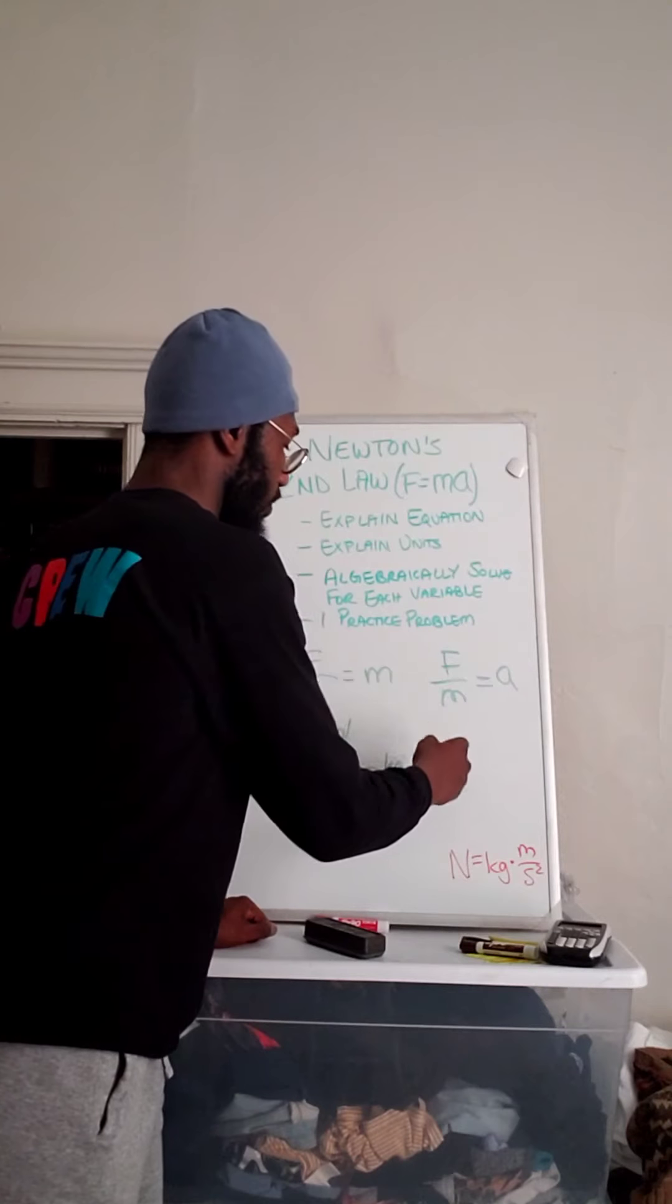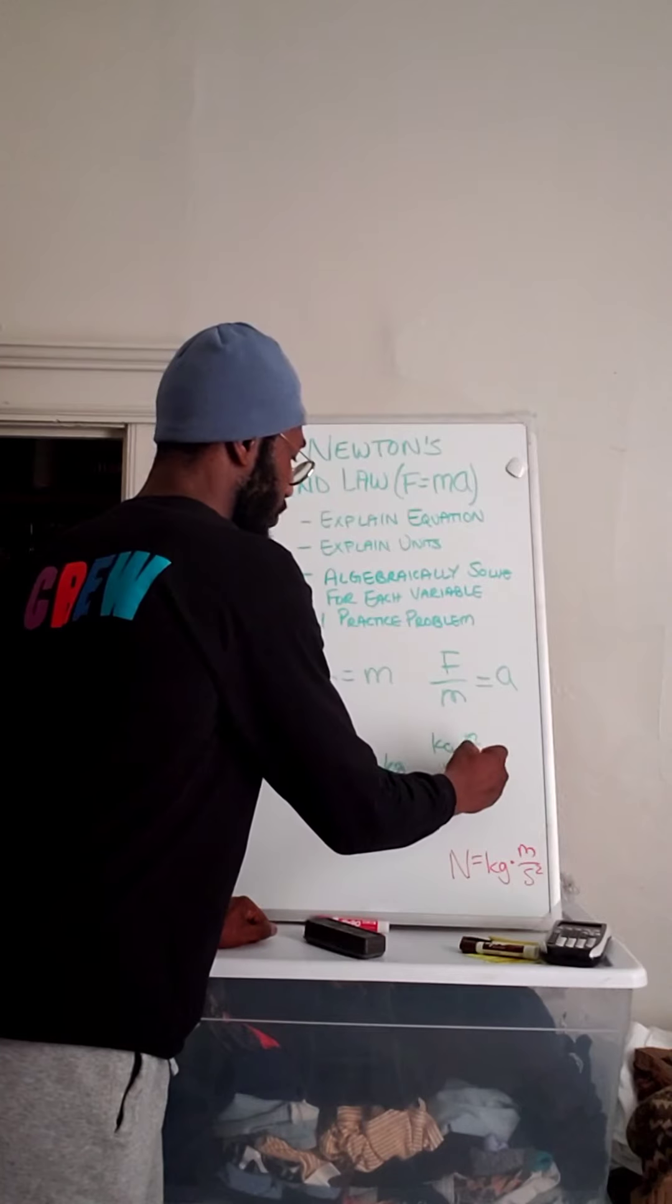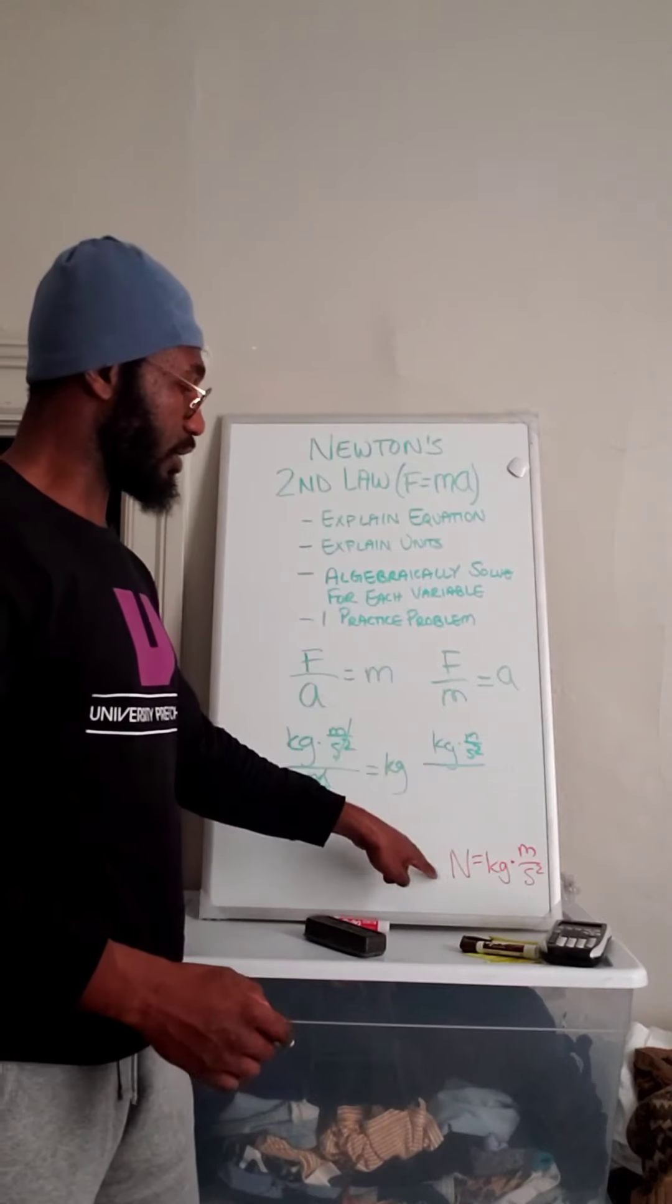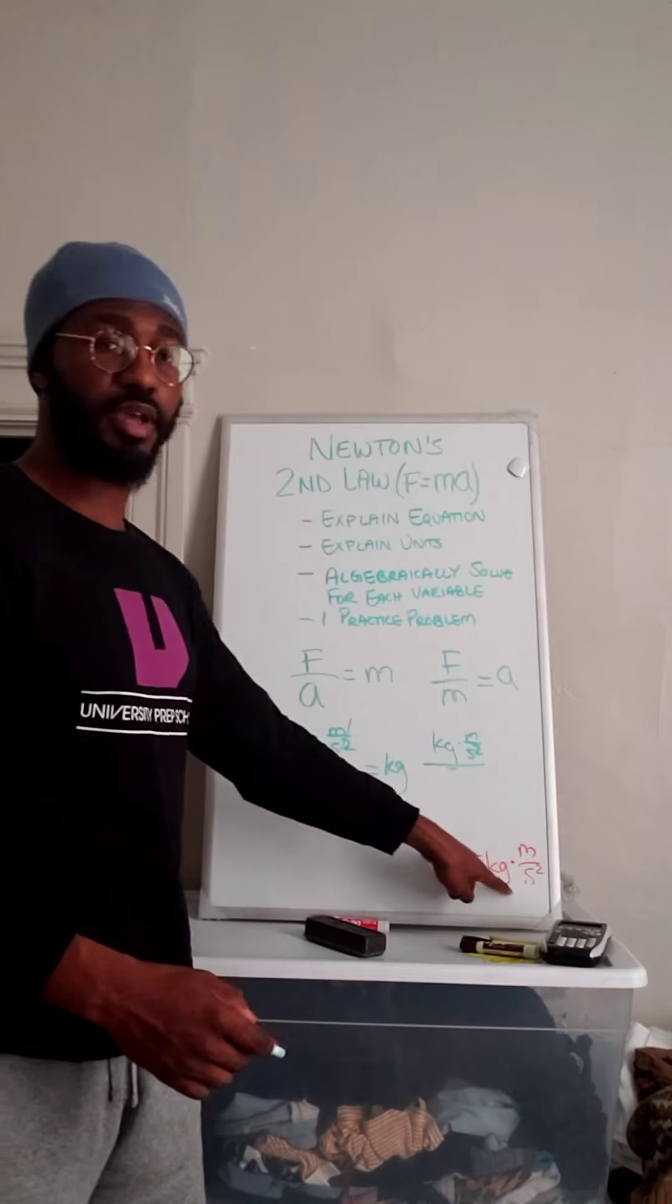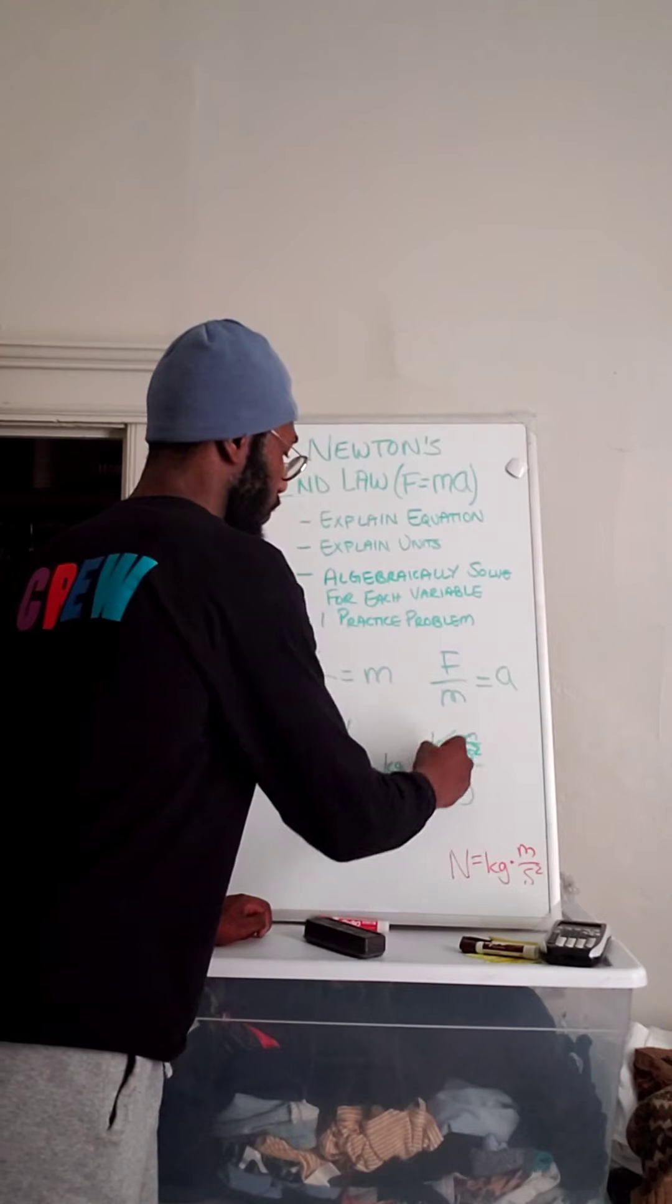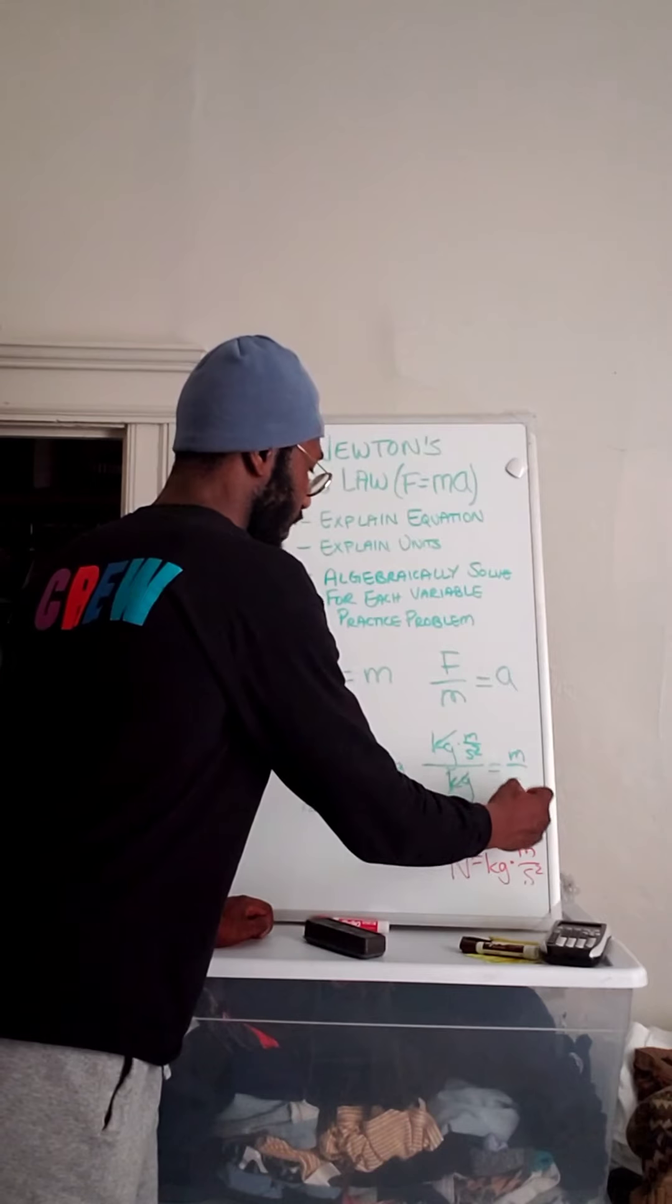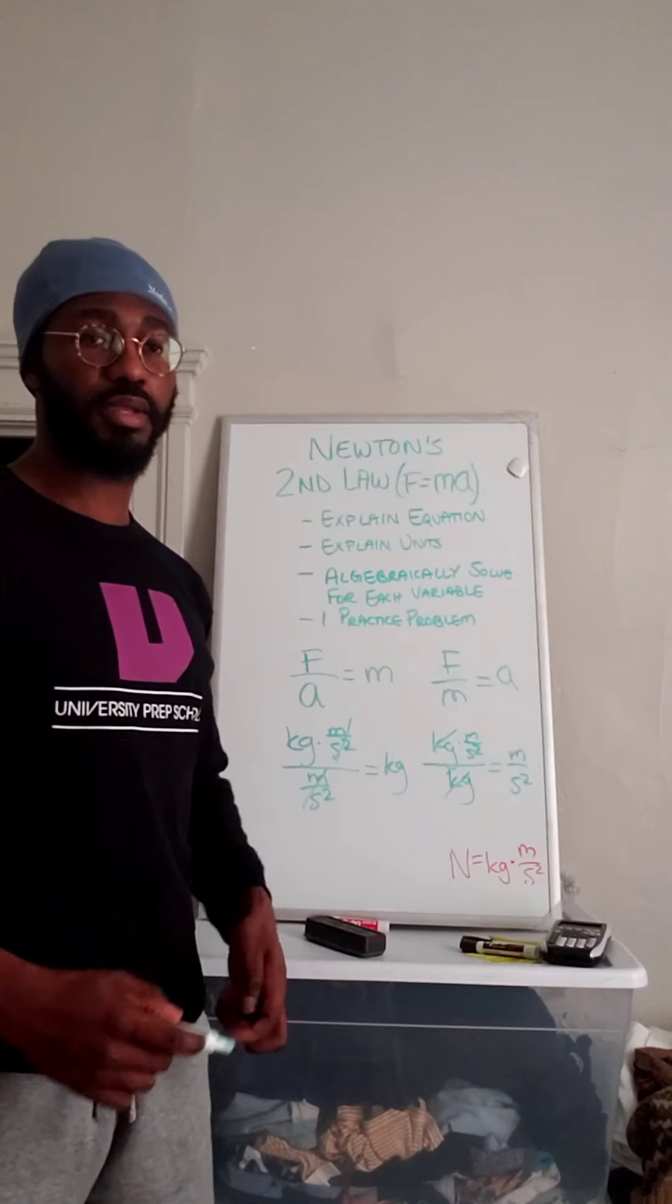Now for acceleration, we do the same thing. We got kilograms times meters per second squared. We just replaced the N in newtons with the other definition. And mass we know is in kilograms. So once we cancel out the numerator and denominator, we're left with meters per second squared, which is indeed the unit for acceleration.